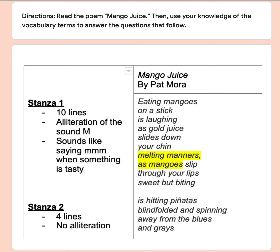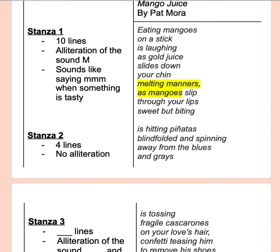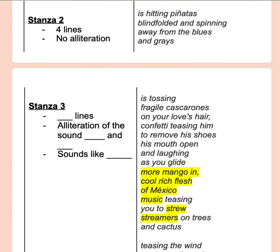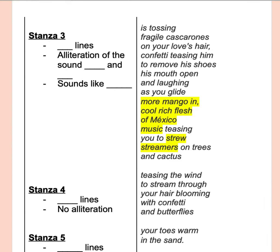Mango Juice by Pat Mora. Eating mangoes on a stick is laughing as gold juice slides down your chin, melting manners as mangoes slip through your lips, sweet but biting. Is hitting piñatas, blindfolded and spinning away from the blues and grays. Is tossing fragile cascarones in your love's hair, confetti teasing him to remove his shoes, his mouth open and laughing as you glide more mango in.